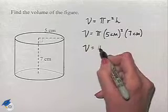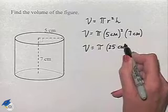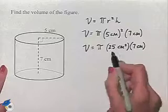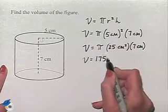We can multiply 5 times 5 to give us 25, and we'll have square centimeters inside the parentheses multiplied times 7. We can then multiply 25 times 7 to give us 175 times pi.